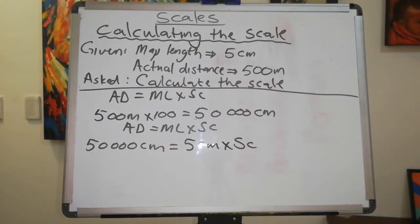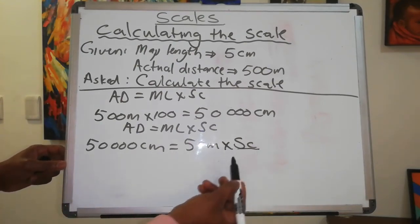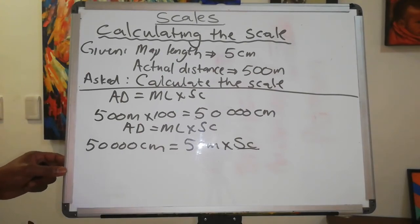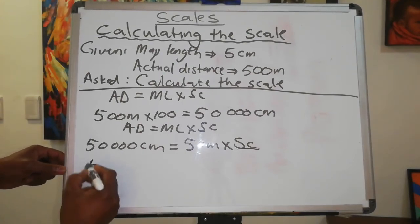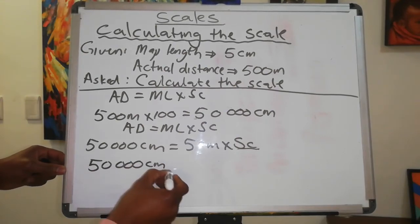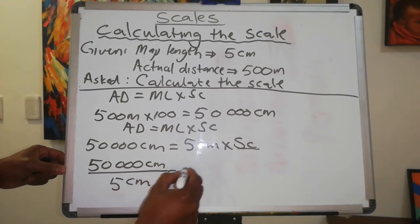SC is for scale. We want to calculate the scale. Therefore, we need to carry the 5 centimeters over to the left hand side. So it's going to be 50,000 centimeters divided by 5 centimeters, and that's equal to the scale.